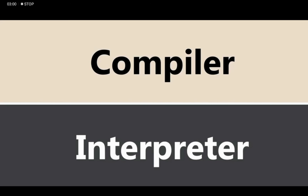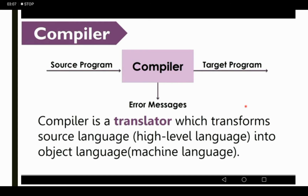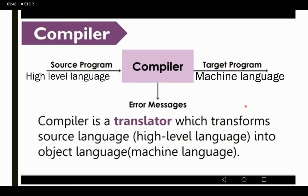Both compiler and interpreter are used to convert high level languages into machine language. A compiler is a translator which transforms source language or high level language into object language or machine language. As you can see in this diagram, there is a source program — which means high level language — and there is a compiler, which converts the source program into a target program. Target program means machine language.